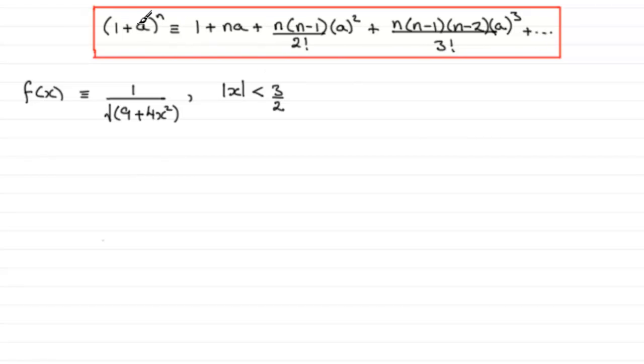But as a brief reminder, you should be familiar with this general formula for the expansion of something of the form (1+a)^n. Now (1+a)^n, you'll find it in most formula books or textbooks: it's identical to 1 + na + n(n-1)/2! × a² and so on.